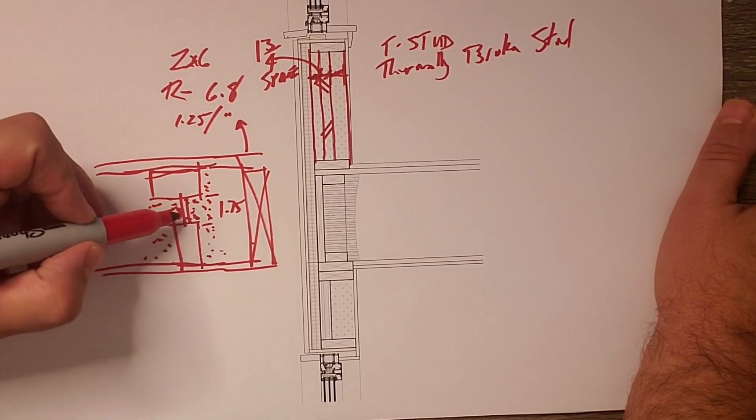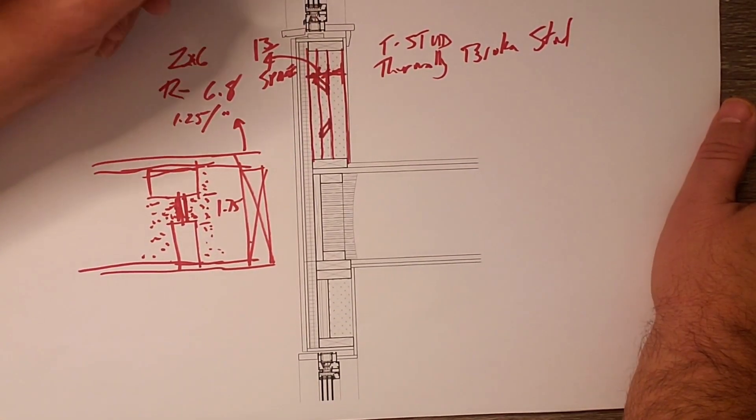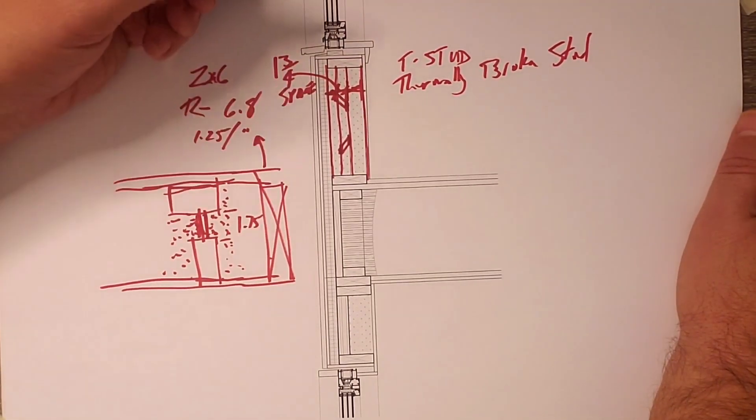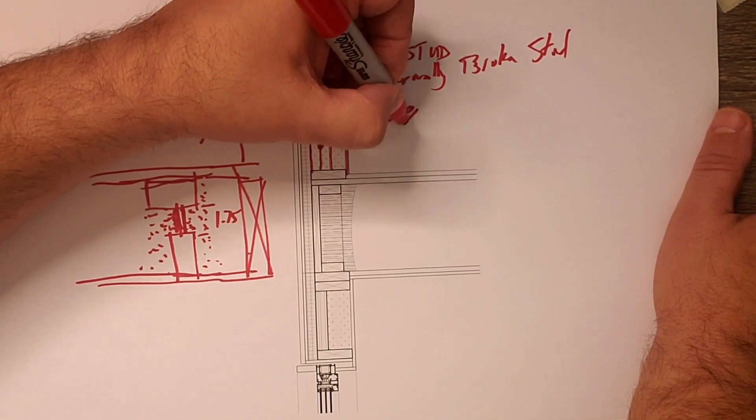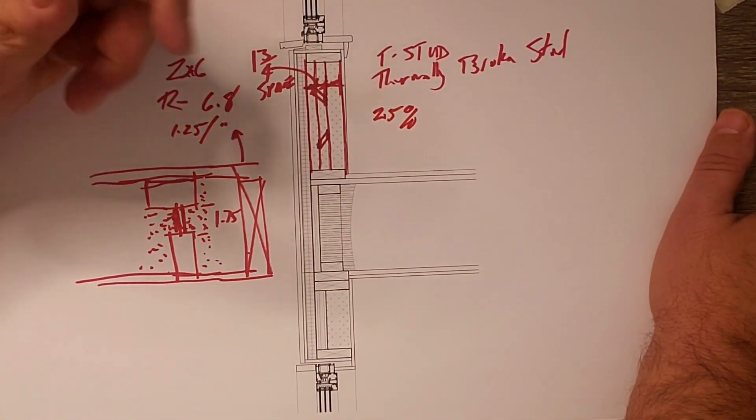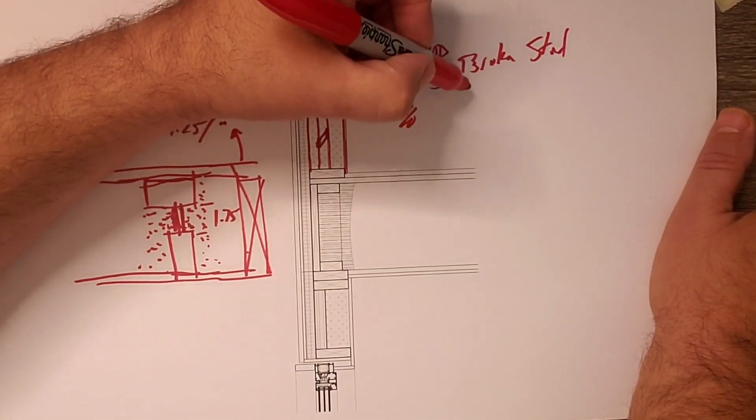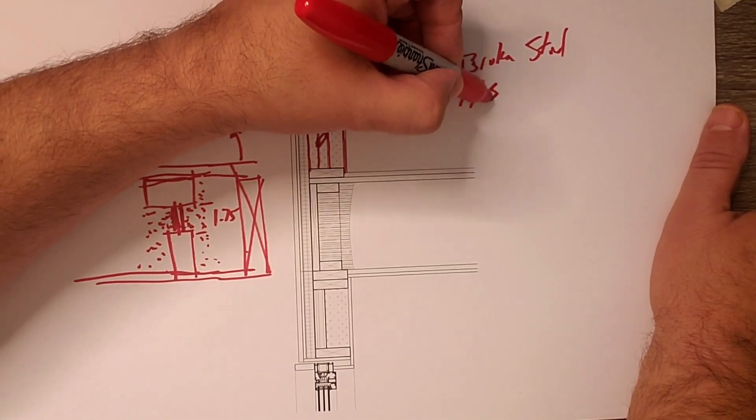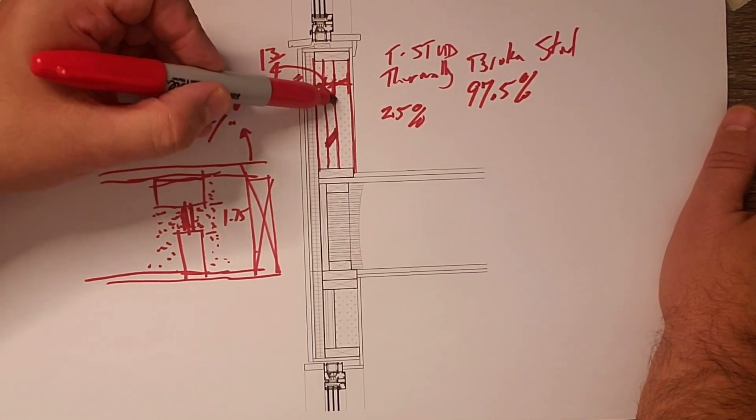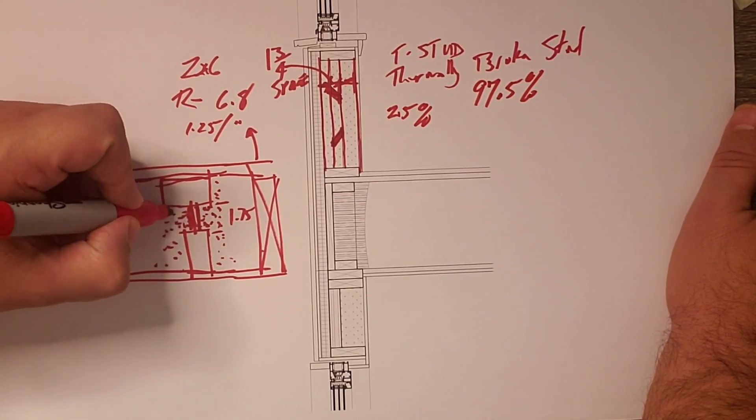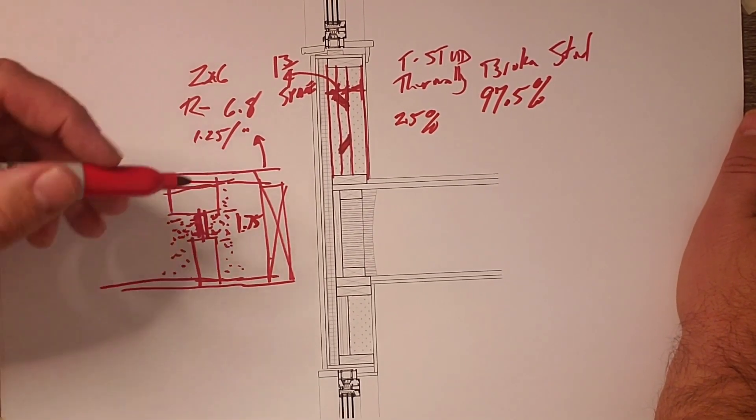Now there is a dowel here and the dowel is at an angle so there is a kind of an elliptical cross-section I actually took the time to calculate that for you and that thermal bridge it comes out to about 2.5 percent of the area in that stud so that means that the T-stud it's a thermally broken stud for roughly 97.5 percent, 2.5 percent there's still that dowel connection.